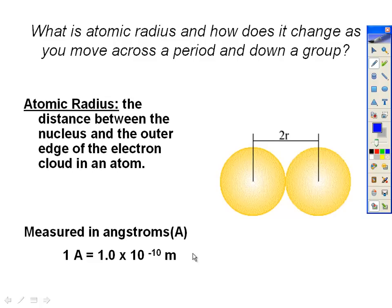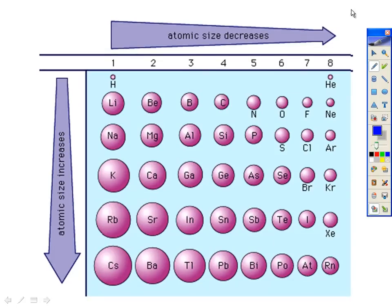So when we talk about the trend, this is your first period, this is your second period, and you can see as you go across the period what's happening. What's happening to your atomic radius or your size? It's getting smaller. Which is sort of weird because you're actually adding protons and electrons every time you go over, but your size is getting smaller. So you have a blank periodic table, and we're going to fill that out.